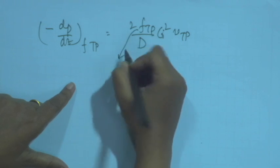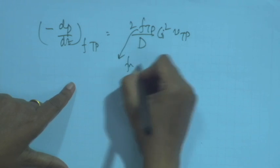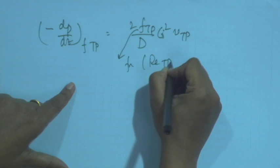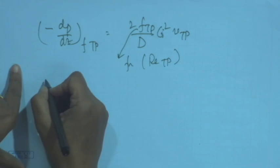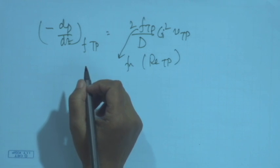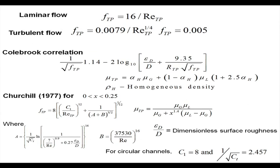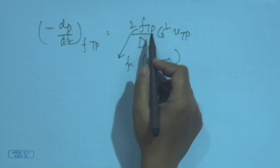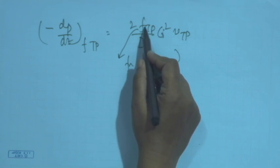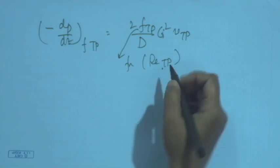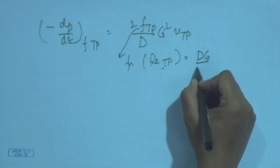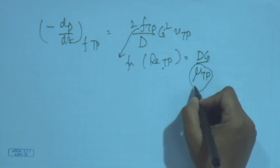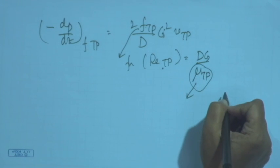Here we find out f_tp, where f_tp can be defined in terms of the Reynolds number Re_tp. To find Re_tp, we need to find μ_tp, and for finding μ_tp there are a large number of expressions available.